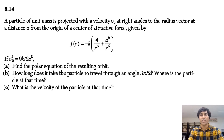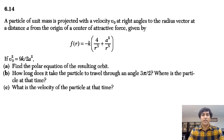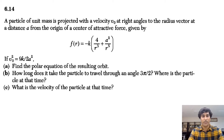Now we will solve problem 6.14. The statement of the problem: a particle of unit mass is projected with a velocity V₀ at right angles to the radius vector at a distance A from the origin of a center of attractive force, which is given as F(R) = −K × (4/R³ + A²/R⁵).